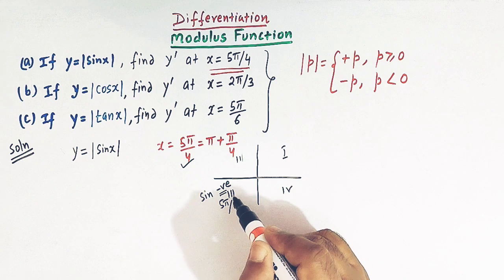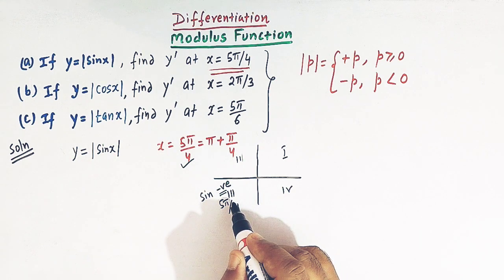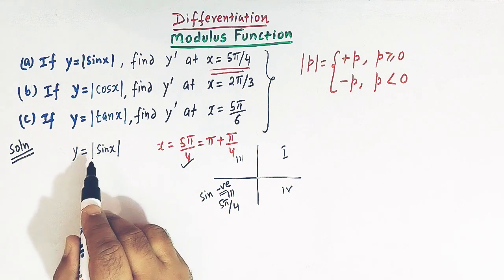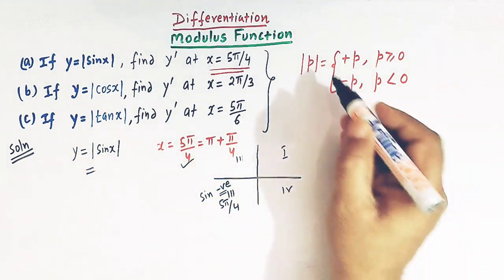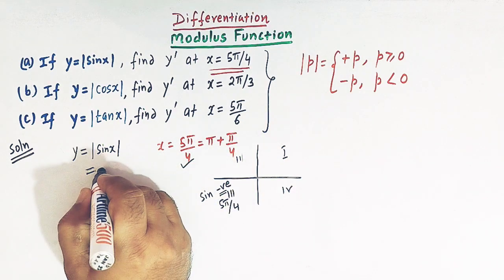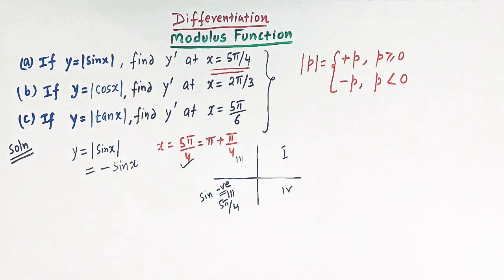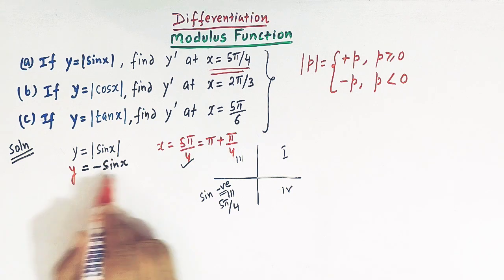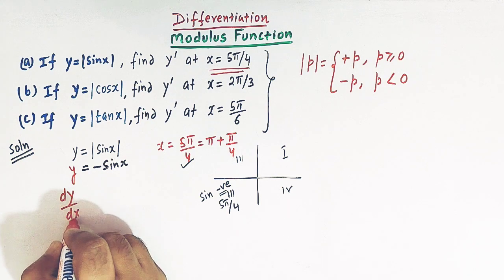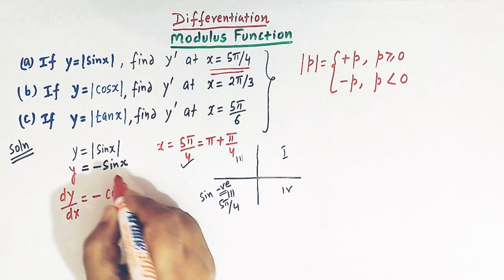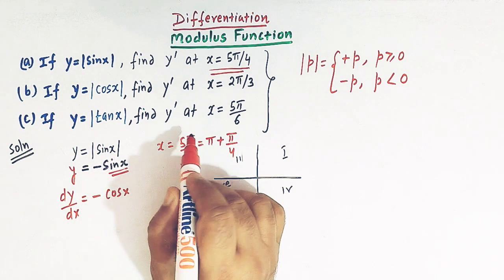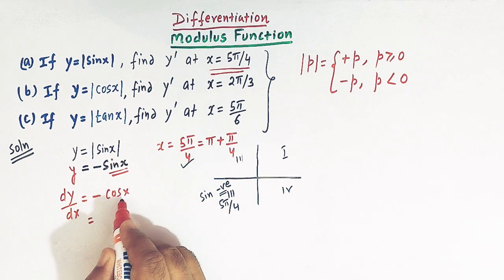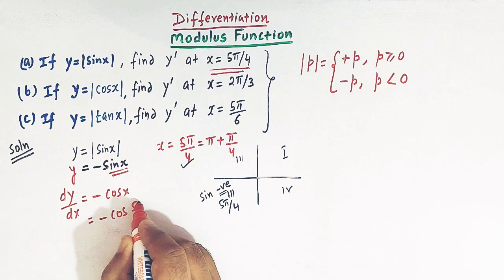Since sin x is negative in the third quadrant, and when the quantity inside the mod symbol is negative, by definition of the mod function, mod of p equals minus p. So here mod of sin x equals negative sin x. Therefore y equals negative sin x. Differentiating both sides, dy/dx equals negative cos x, because the derivative of sin x is cos x. Now to find the derivative at x equal to 5π/4, we substitute to get minus cos(5π/4).